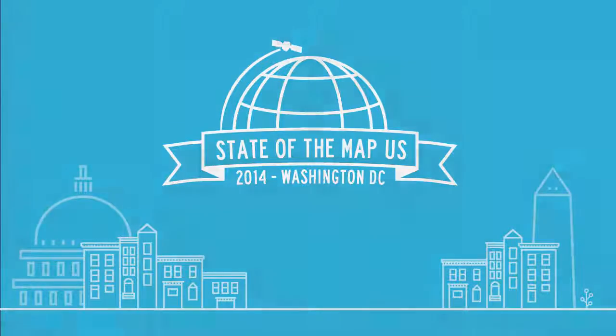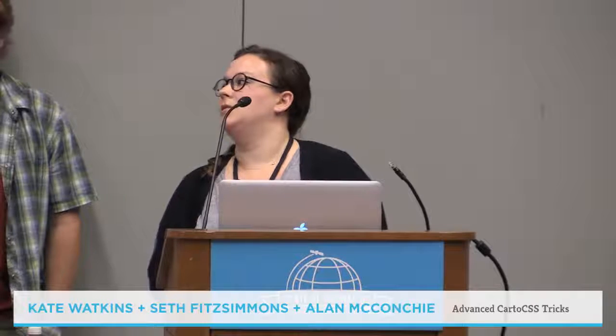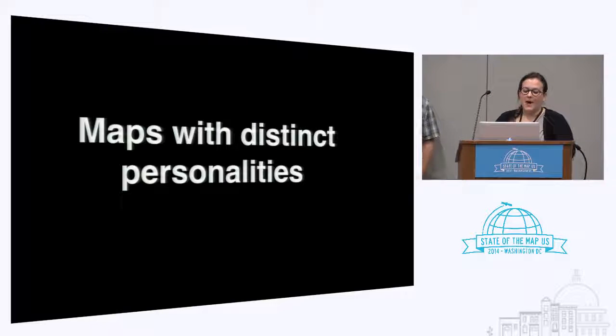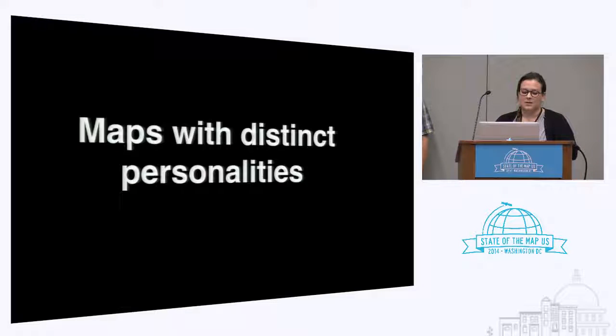In this presentation, we're going to be talking about various CartoCSS treatments that we've been using in recent maps. Our main theme is maps with distinct personalities, and pushing the limits of what is possible in the most aesthetically pleasing way. The maps we are showing today have all been made in Mapbox data tiles and TileMill 2, all within the last six months.